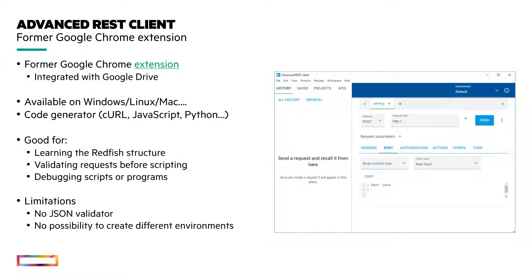Browsers also have REST client extensions. The Advanced REST client used to be a Google Chrome extension but it is now a stand-alone application supported by many operating systems. It has fewer features than Postman or the Visual Studio Code extension presented earlier, but it is sufficient to verify or validate quickly simple Redfish requests.